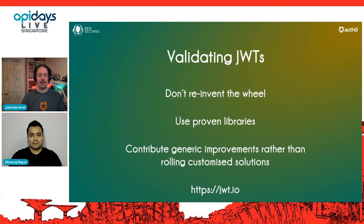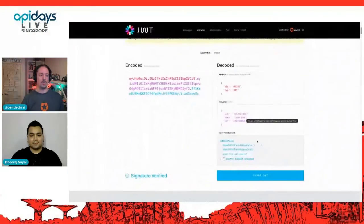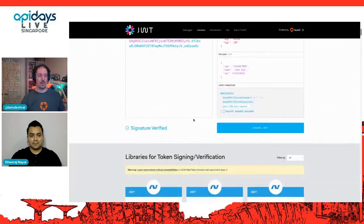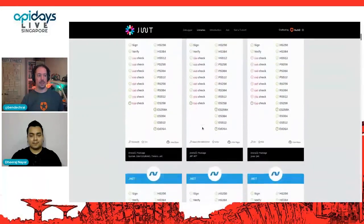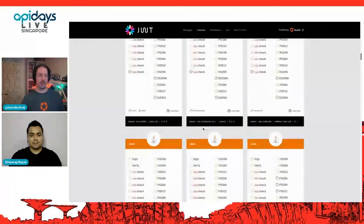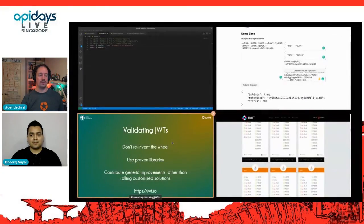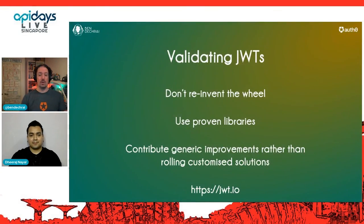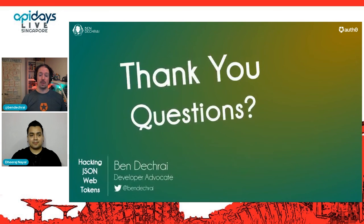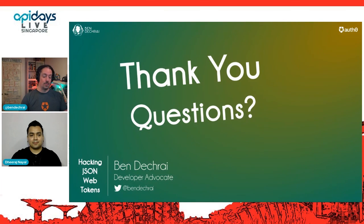In essence, the outcome of this is: don't reinvent the wheel. Use those proven libraries available at JWT.io — there's a whole load of library references showing how you can make your application more secure. Writing your own security is hard. Writing your own crypto is hard. Contribute back if you do need to make changes to open source software. Thank you for your time. We're at the booth so you can come and ask me questions.